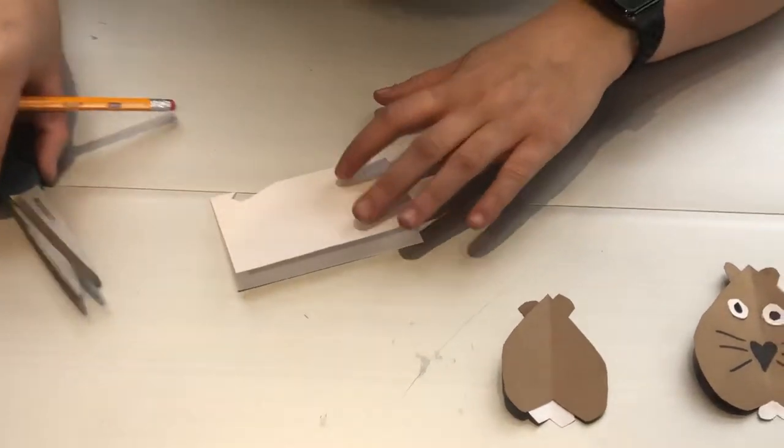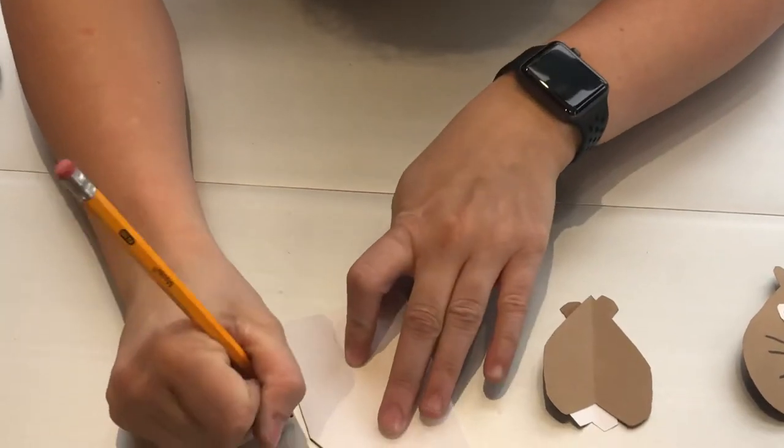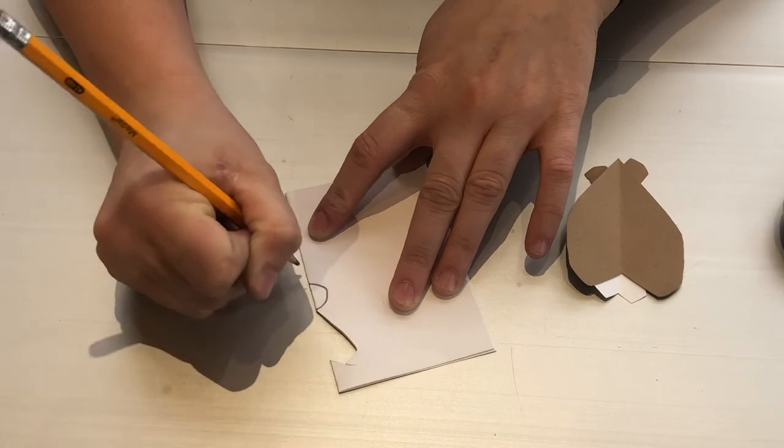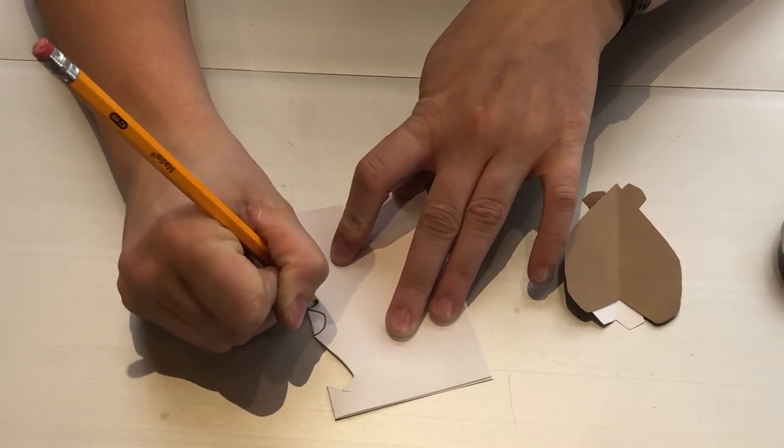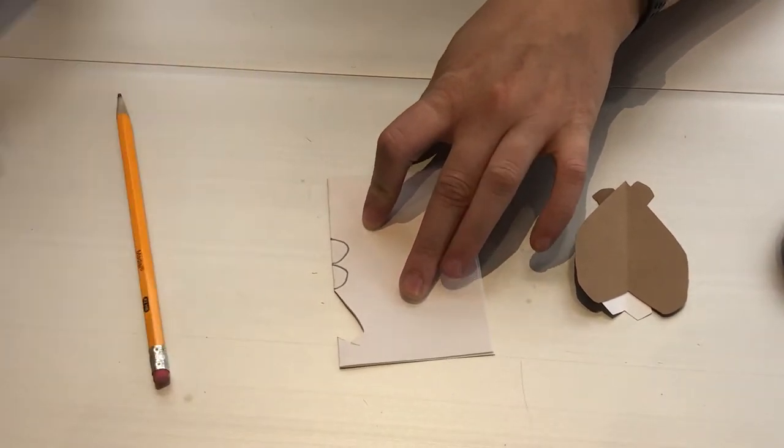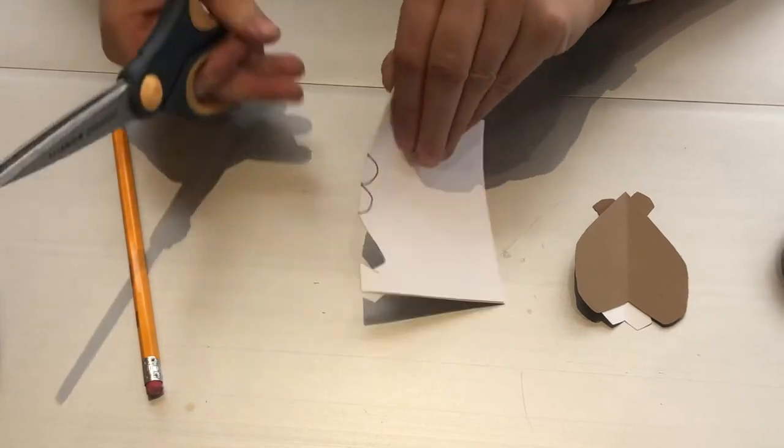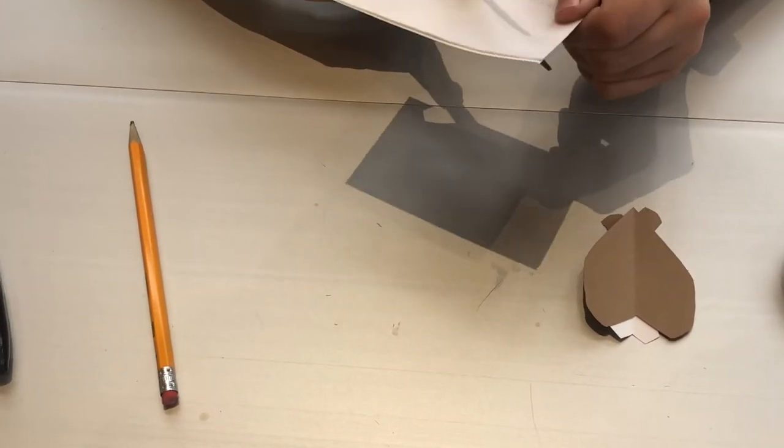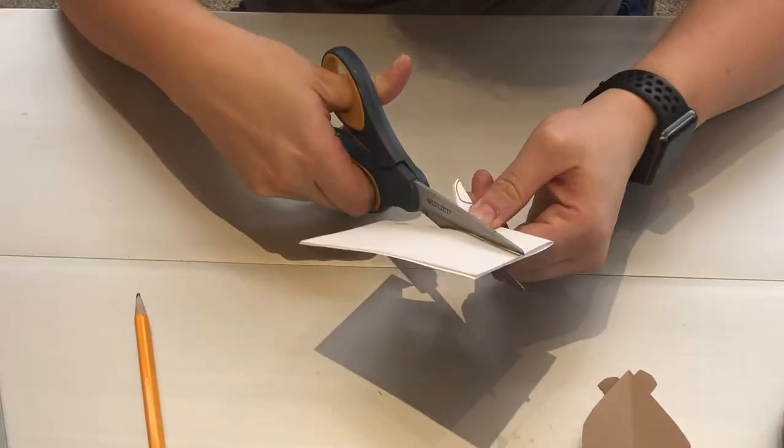And then what I did was I just drew like a little half circle, and then another half circle. And then you just cut both of those out.